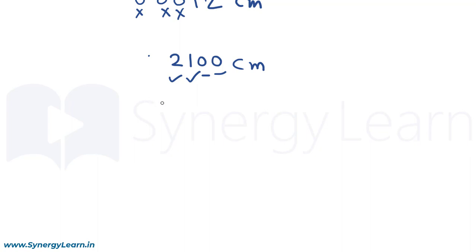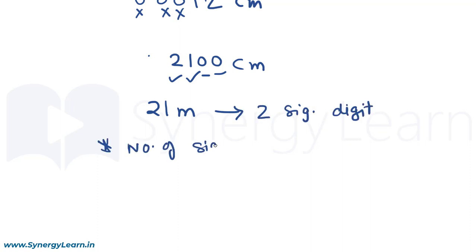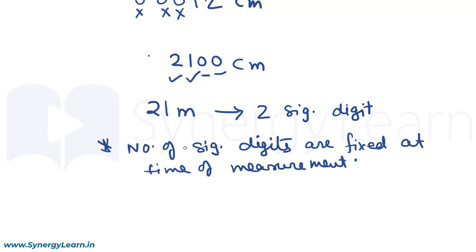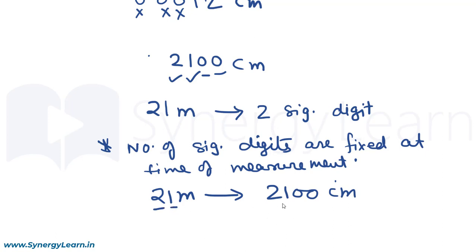Say we have measured something as 21 meters. This has two significant digits, and the number of significant digits gets fixed at the time of measurement. So 21 meters will have two significant digits. If someone converts this to 2100 centimeters, merely converting the unit does not change the number of significant digits. So in 2100 centimeters we should still have only two significant digits: 2 and 1.